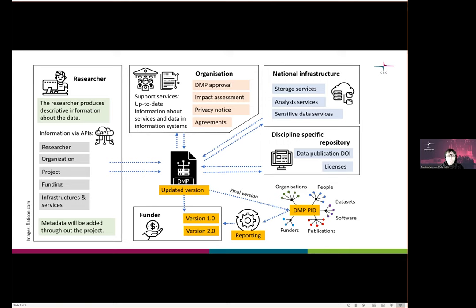Already at this stage, basic information needed could be fetched from the organization's own information systems or from the national research.fi hub. Metadata should then be added throughout the project, keeping not only the DMP up to date but also providing up-to-date information about the project and its data to the organization's information systems. This information could then be reused for impact assessment, privacy notices, and the needed agreements between partners.